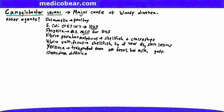Clostridium difficile (C. diff) can cause bloody diarrhea and is very much associated with a history of antibiotic use. Those are some agents that cause bloody diarrhea. For cases with no blood in the stool, we can think about a viral cause, Giardia lamblia, cryptosporidiosis, Bacillus cereus, and Staph aureus.